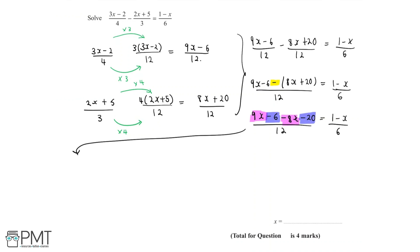So now let's simplify this. 9x take away 8x is the same as x, and minus 6 minus 20 is minus 26. So we have x minus 26 over 12 equals 1 minus x over 6.